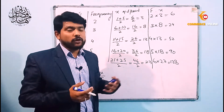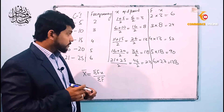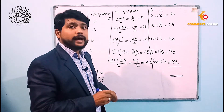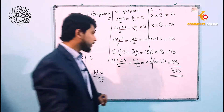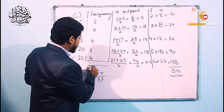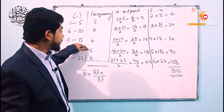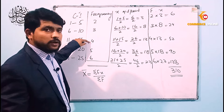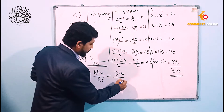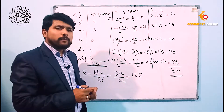अब इन तमाम fx values को add करना है। When we add them: 6+24+52+90+138 = 310. And now we need Σf, so let's add the frequencies: 2+3=5, 5+4=9... total = 20. So mean = 310 ÷ 20 = 15.5.